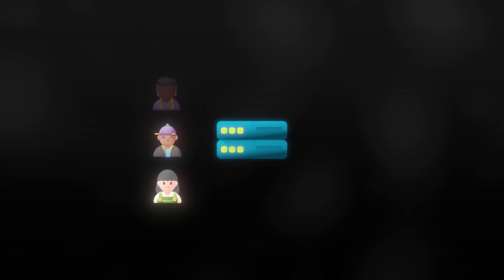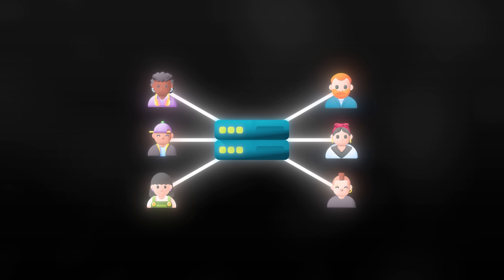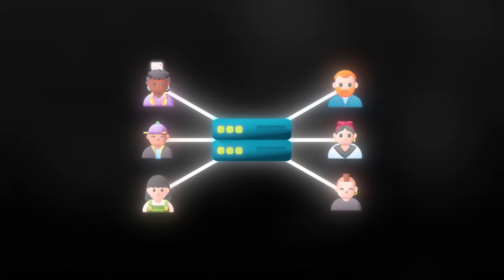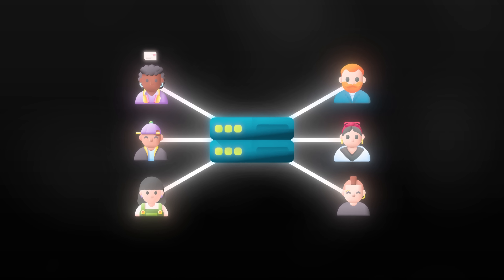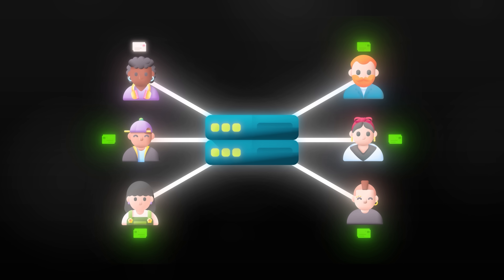The way chat applications typically work is you have all your users connected to a centralized state. Whenever a chat message pops up, you need to send the state to all users and keep them updated. Now for 5, 10, 15, 20, or 50 users, this was all fine — it's computers that we're talking about here.